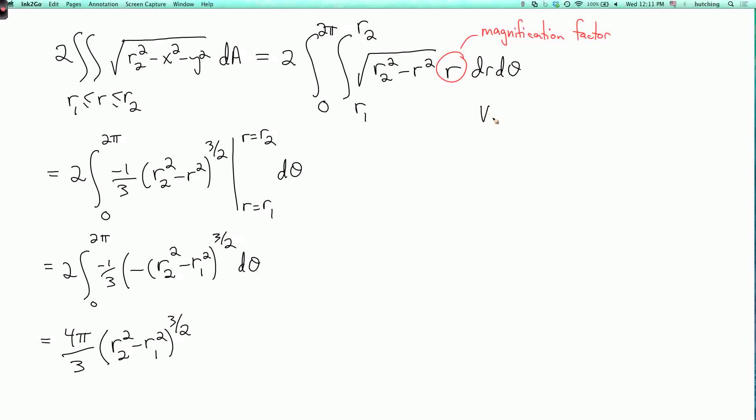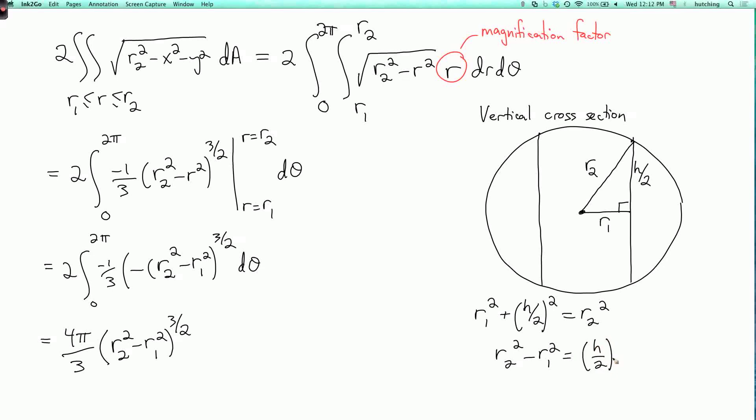Well, let's draw a vertical cross-section of our region. So here is a circle of radius r2. Then I have a cylinder, radius r1. Okay, so if I draw a center point here, the distance to the outer circle is r2, and the distance to the vertical line, which is the boundary of the cylinder, is r1. And this is a right triangle. The other leg of this right triangle is one-half the height of this cylinder by symmetry. So by the Pythagorean theorem, I have r1 squared plus h over 2 squared equals r2 squared. And so r2 squared minus r1 squared is h over 2 squared.